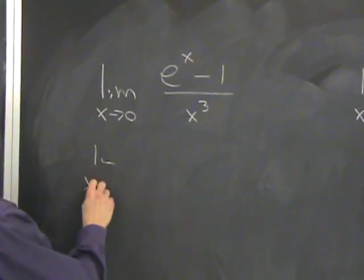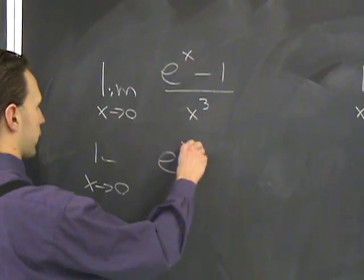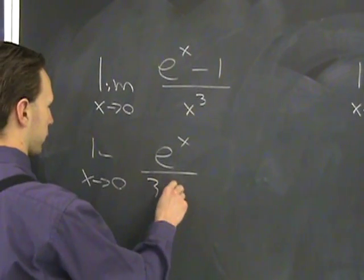So limit x goes to 0 again, the derivative of the top, e to the x, the derivative of the bottom is 3x squared.